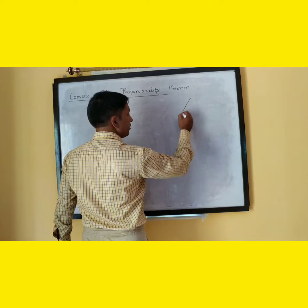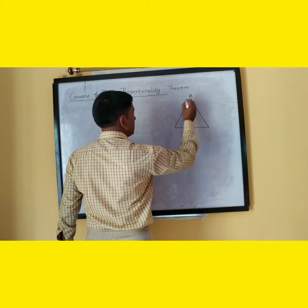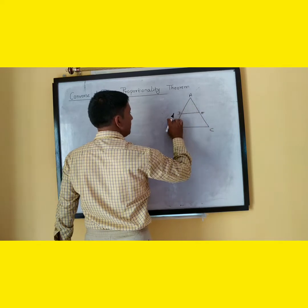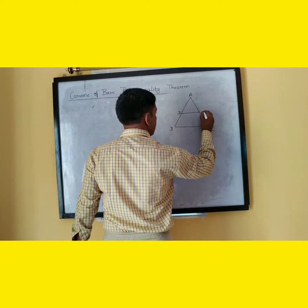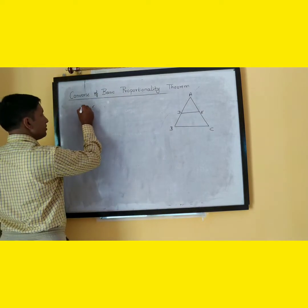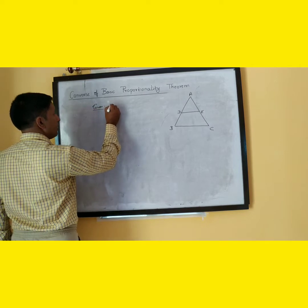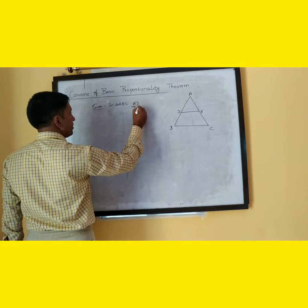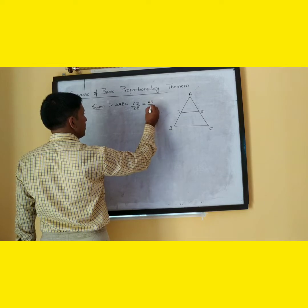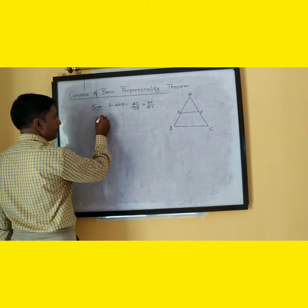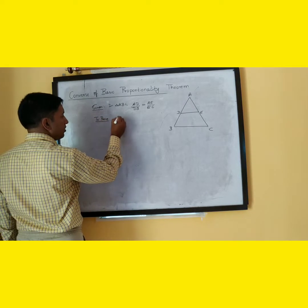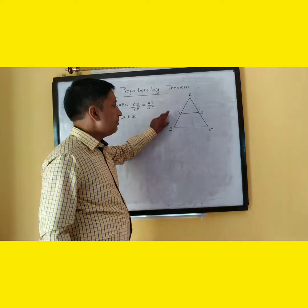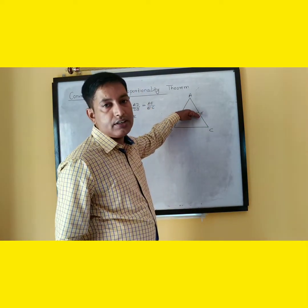Now we will prove this theorem. It is given that in triangle ABC, AD divided by DB is equal to AE divided by EC. We have to prove that DE is parallel to BC.